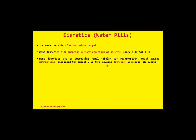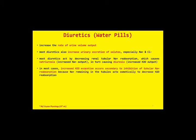Water molecules have a tendency to follow sodium ions. So whenever there is natriuresis — increased excretion of sodium ions — water molecules tend to follow, and hence water is also excreted. Diuresis in most cases is secondary to natriuresis. This is due to the phenomenon of osmosis: water has a strong tendency to follow sodium ions, so whenever there is natriuresis, this will be followed by diuresis as well.